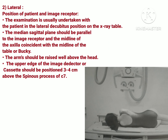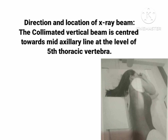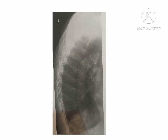Moving towards the lateral view: the examination is performed in lateral decubitus position on the X-ray table. The medial sagittal plane and midline of the body is under the image receptor, and the midline at the axilla or armpit is coincided with the midline of the table. Arms are raised on the head; the head is supported with a pillow and pads so that the patient is comfortable. The upper edge of the image detector or X-ray cassette is positioned 3 to 4 centimeters above the spinous process of C7. The collimated vertical beam is centered towards the mid-axillary line at the level of the 5th thoracic vertebra.